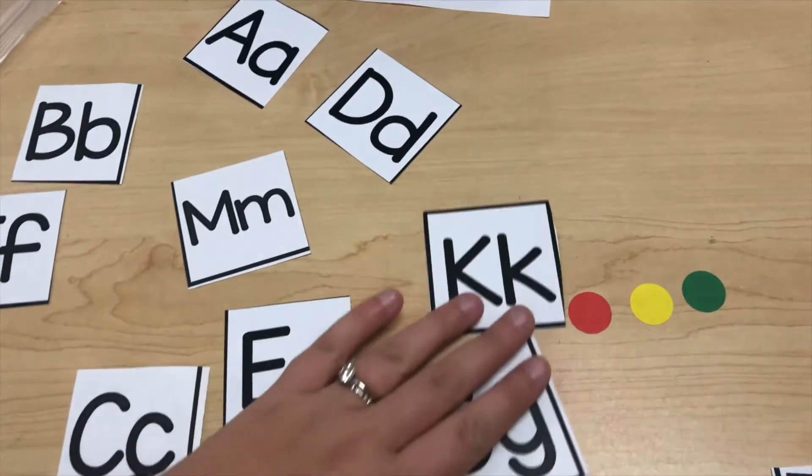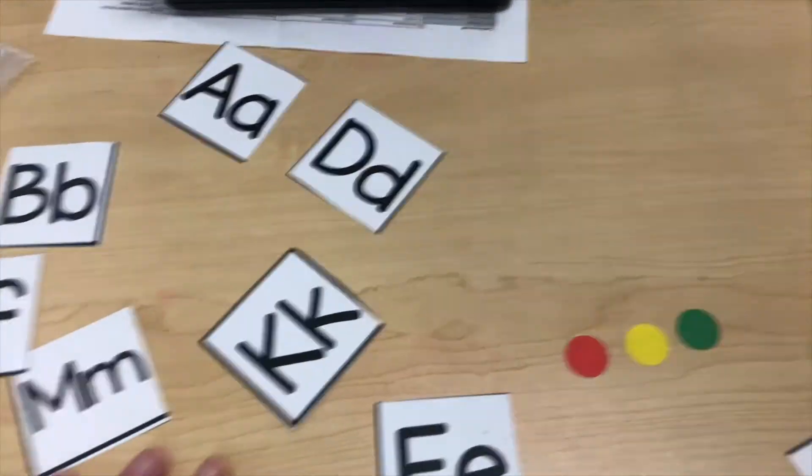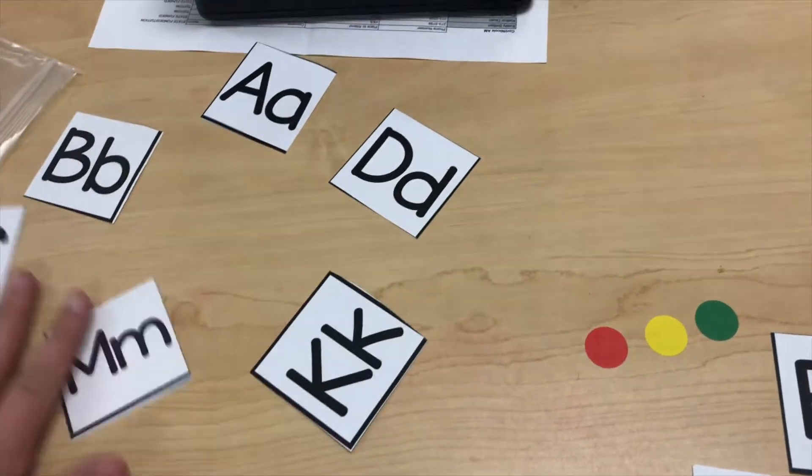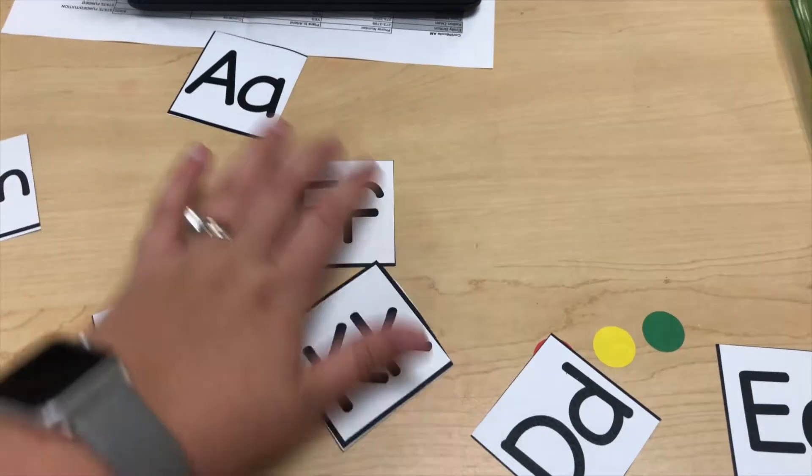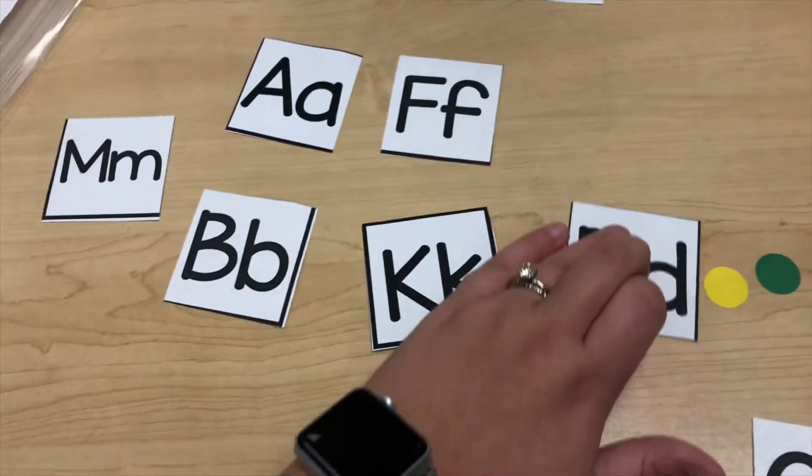So here's what I was thinking for today's activity. Pull out your M and your K and then mix in a few different letters. Let's start with four other letters. So you'll mix them up and then have your kids find the letter K.